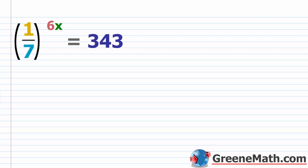Let's look at another one. We have one seventh raised to the power of six x equals 343. The idea here is that you're going to rewrite things to have like bases. Seven is a prime number, so that's a hint — is 343 divisible by seven? It is: 343 divided by seven is 49, divided by seven again is seven. So 343 is seven cubed.